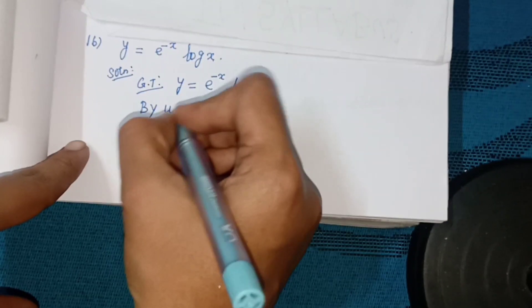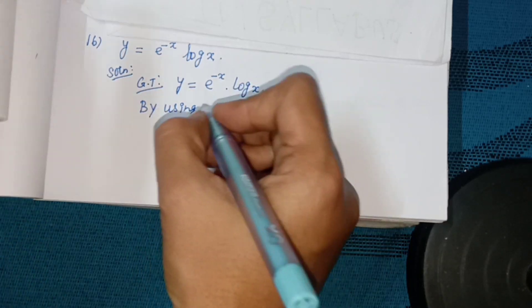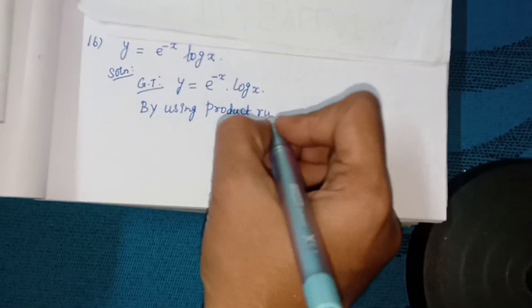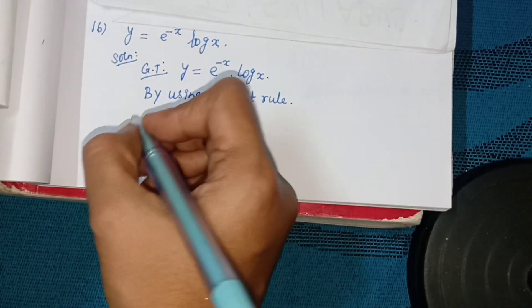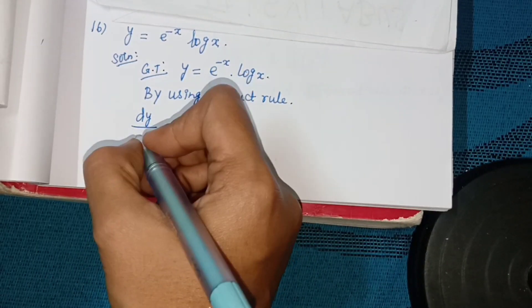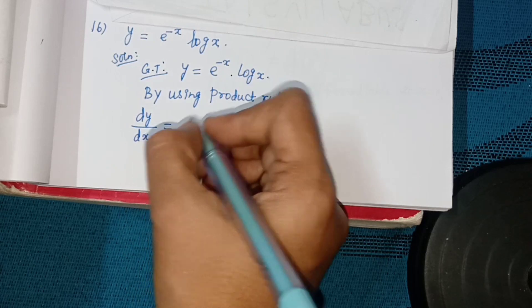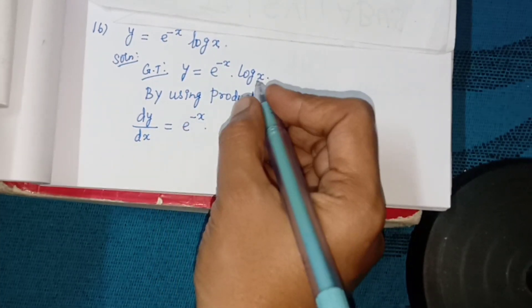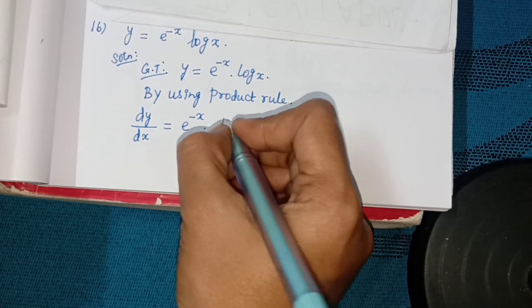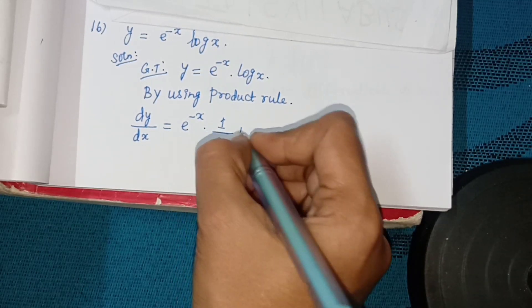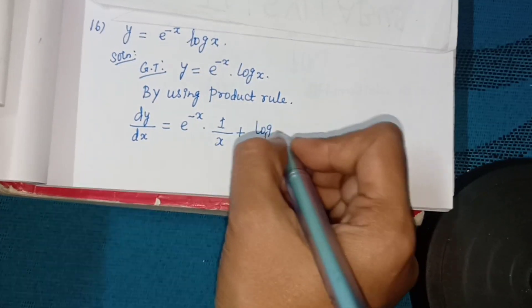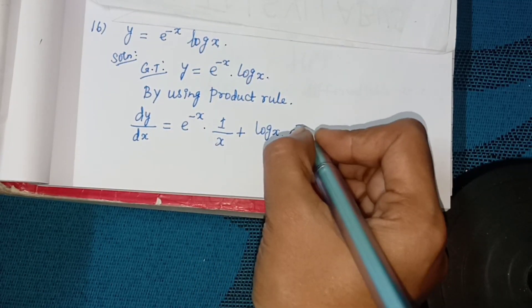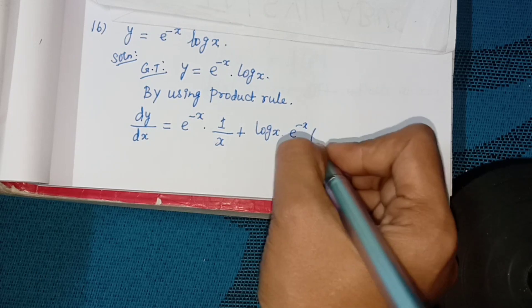By using product rule, differentiate: dy by dx equal to e power minus x, log x differentiate gives 1 by x, plus log x, e power minus x differentiate gives e power minus x into minus x.